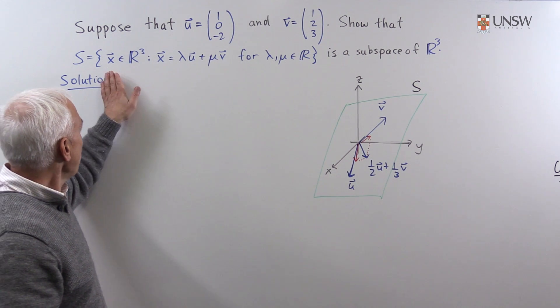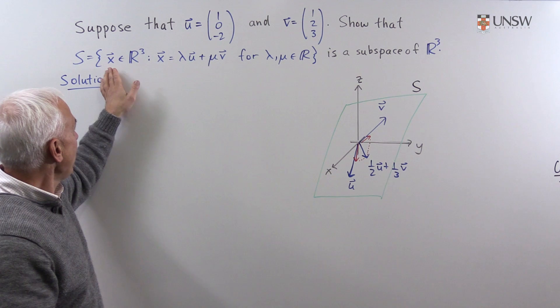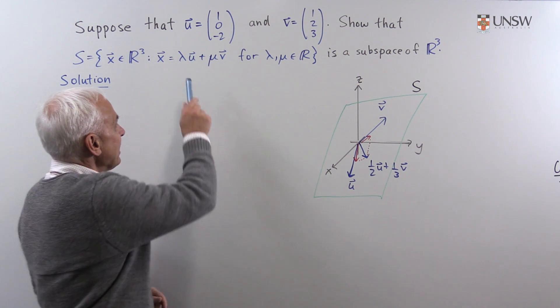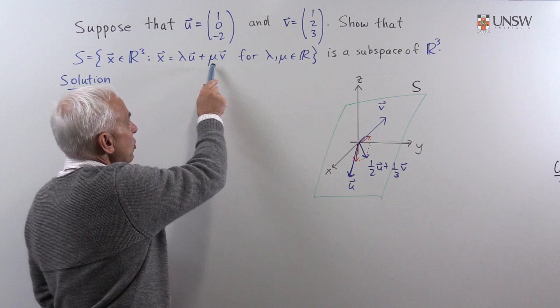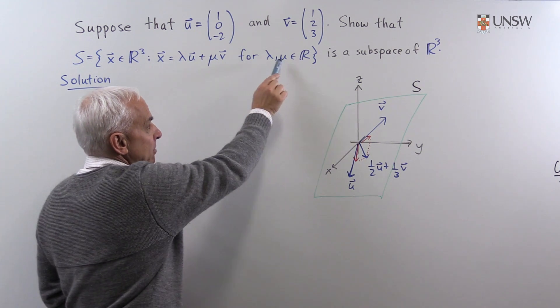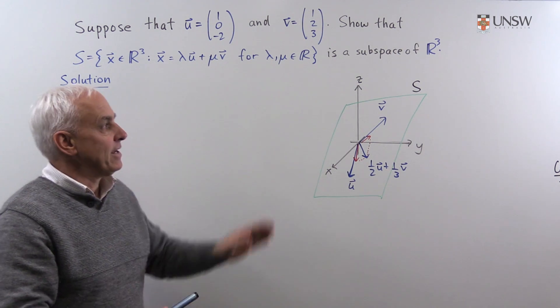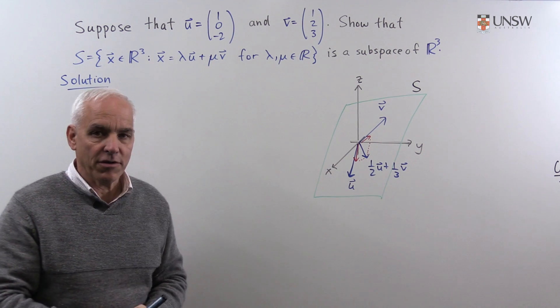We have to show that this set, the set of all x in R³ such that x equals λu plus μv for λ and μ in R, is a subspace of R³.